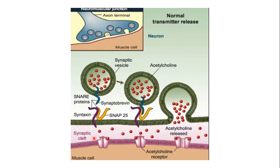The important proteins responsible for this fusion — the fusion of the neurotransmitter vesicle to the membrane of the presynaptic neuron — are: synaptobrevin, which is present in the neurotransmitter vesicle; syntaxin; and SNAP25. These are collectively known as the SNARE proteins. Their collective function is to fuse the neurotransmitter vesicle to the presynaptic membrane so that acetylcholine is released into the synaptic cleft and attaches to receptors on the muscles, causing muscular contraction.